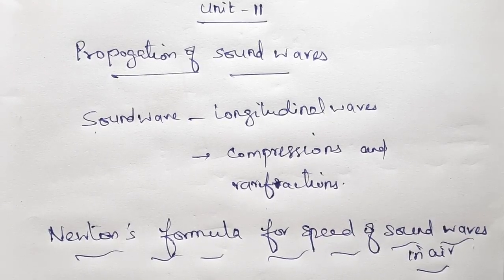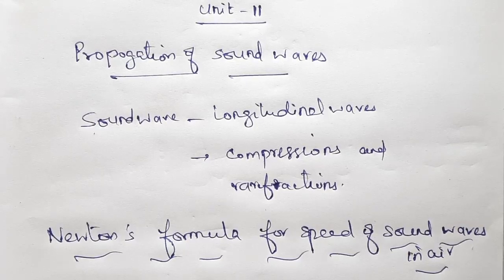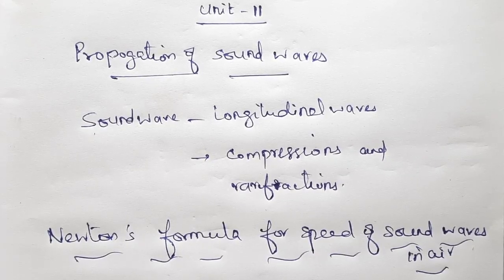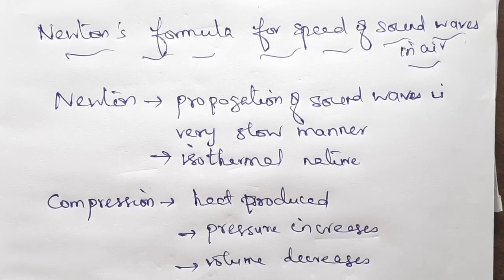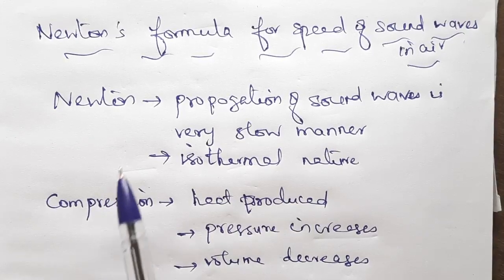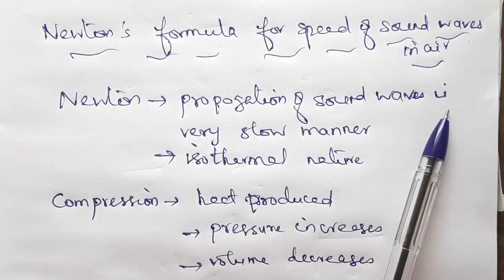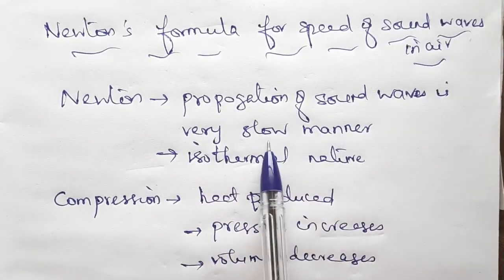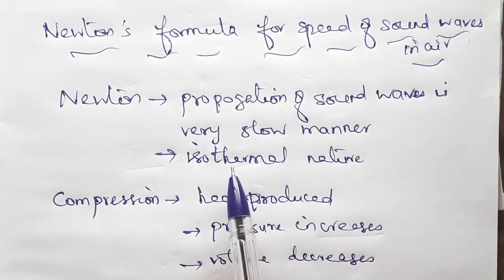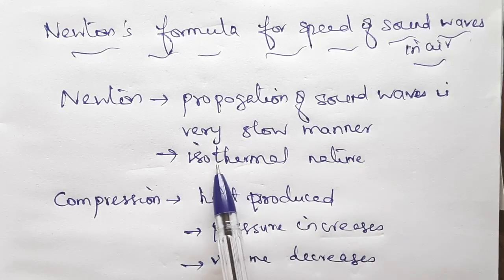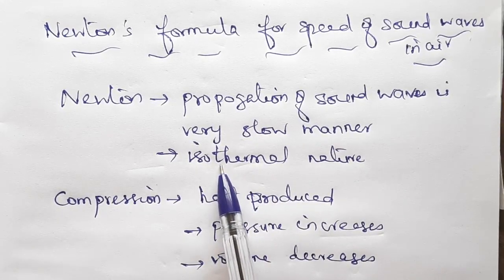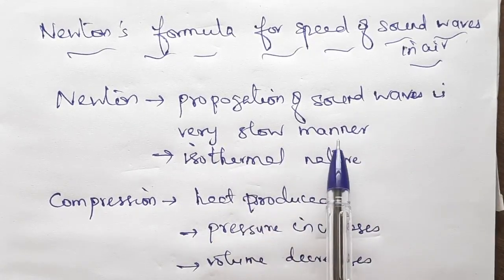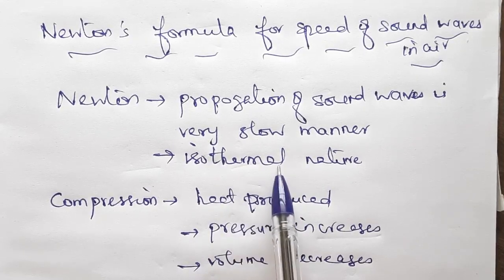We are using Newton's formula, as well as Laplace correction, to discuss the speed of sound waves. Newton assumed that the propagation of sound waves in air medium is a very slow manner. He considered the process to be isothermal in nature. Isothermal means temperature remains constant. So he assumed that the propagation of sound waves is slow, meaning the process is isothermal in nature.